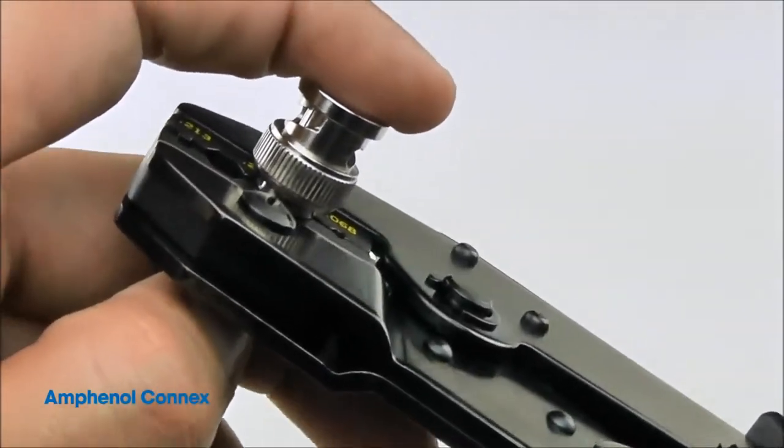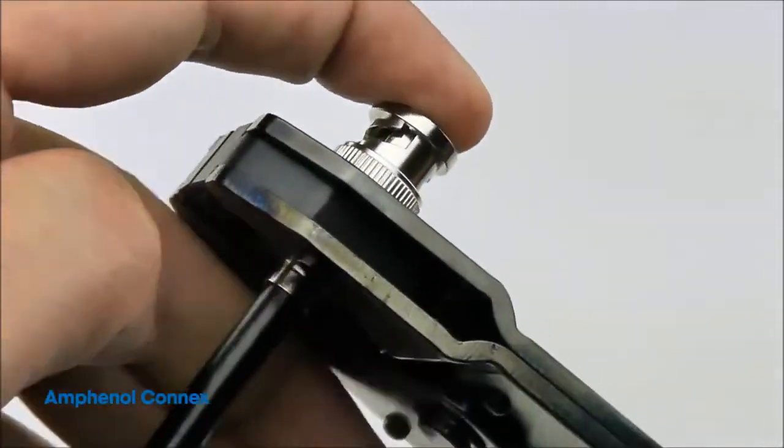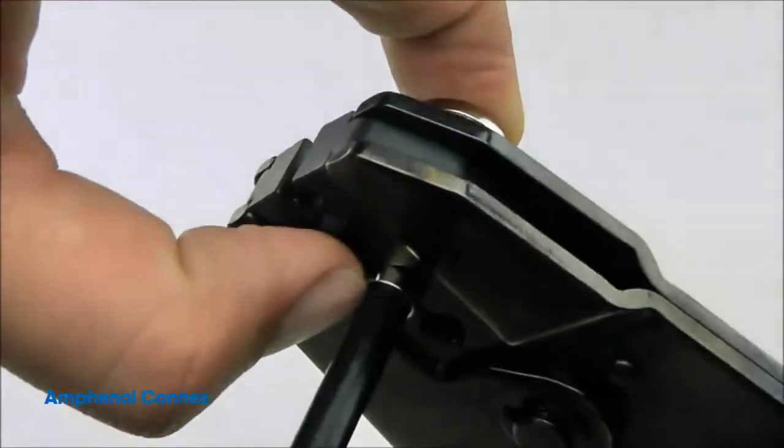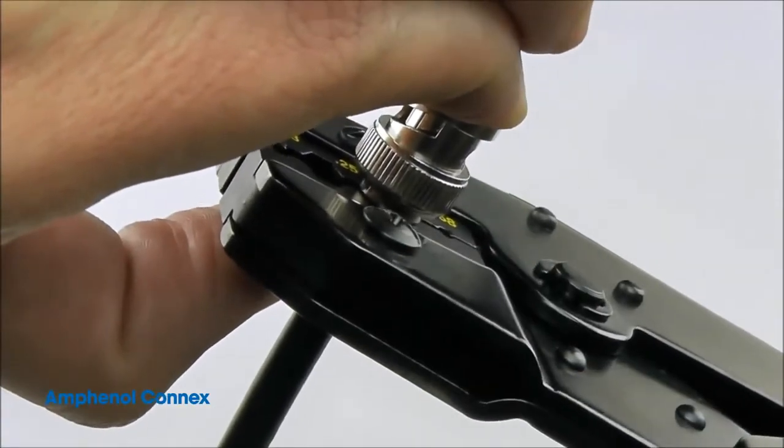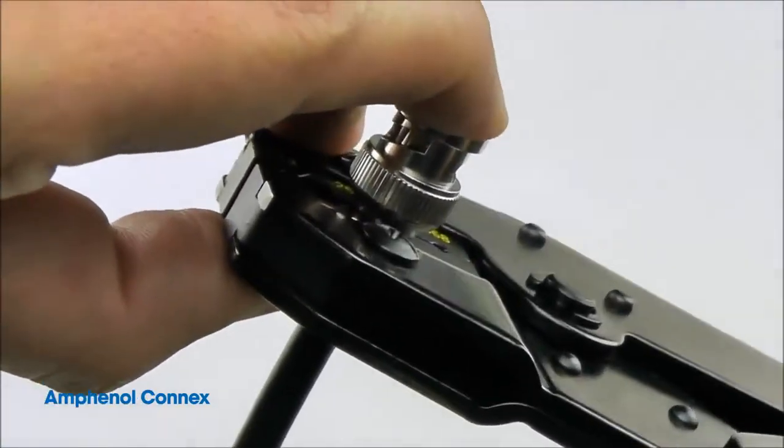Loosely close the tool around the ferrule, just enough to hold it in place while you reposition your hands so that the connector body and ferrule are clamped between your thumb and index finger. This will ensure that the ferrule sits flat against the connector when crimped.